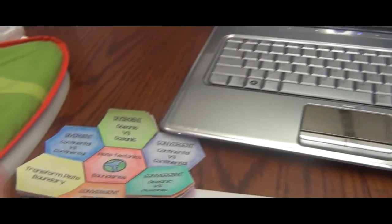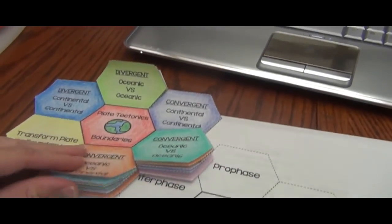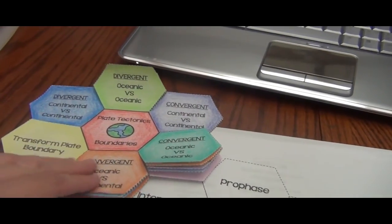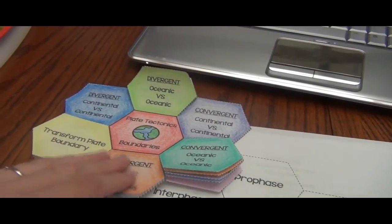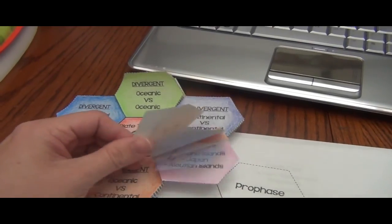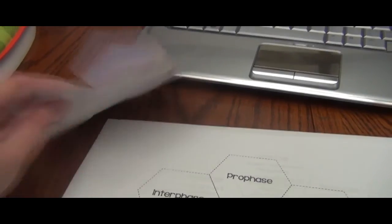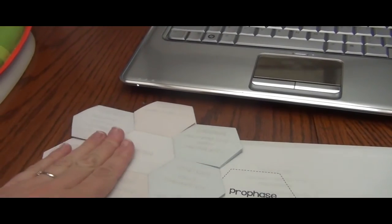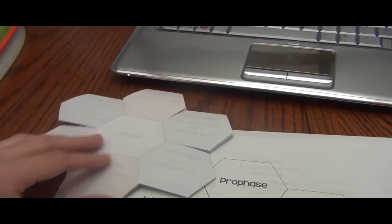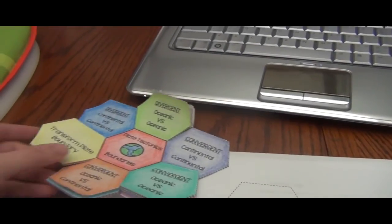Here is an example of my plate boundaries foldable. It is going to be very similar for the mitosis. The only difference for the mitosis is I'm going to have it to where you have the front and then I'm also going to have it posted on the back so that you can use both sides of the foldable.